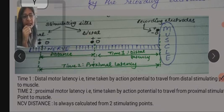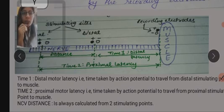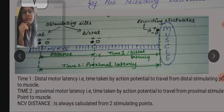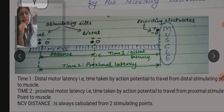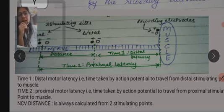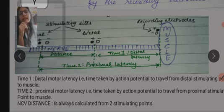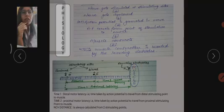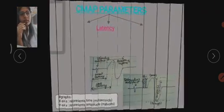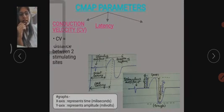Also, the thing to remember here is that time two will always be greater than time one. This is because the response from the proximal site will always take longer due to the greater distance. So, conduction velocity equals the distance between the two stimulating sides divided by time two minus time one.